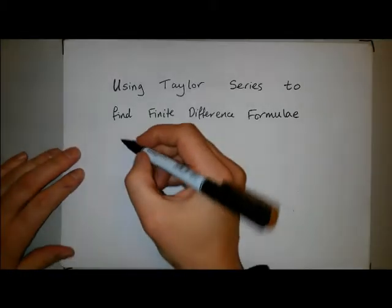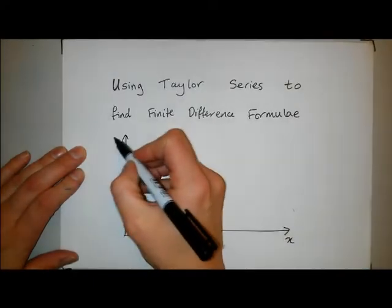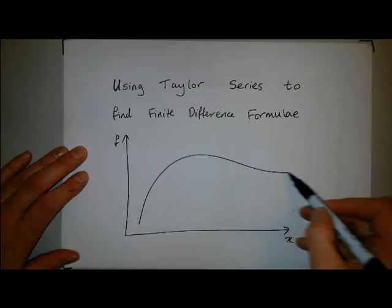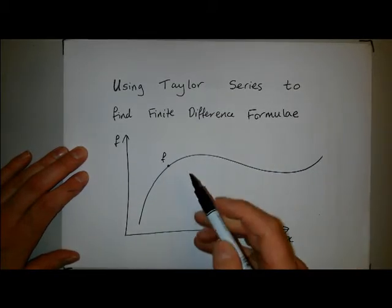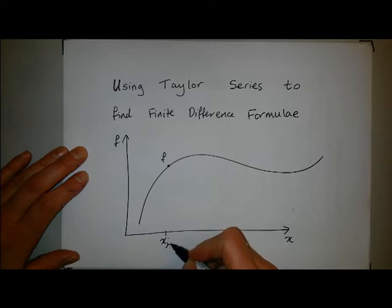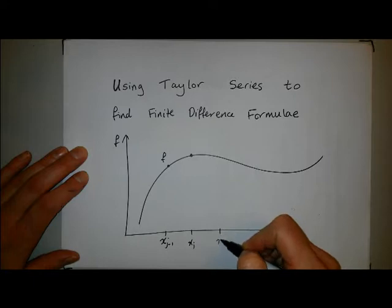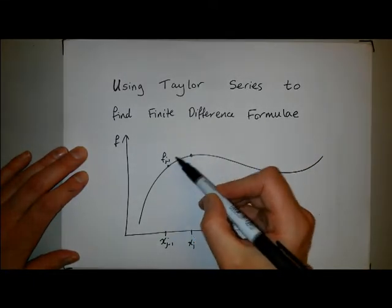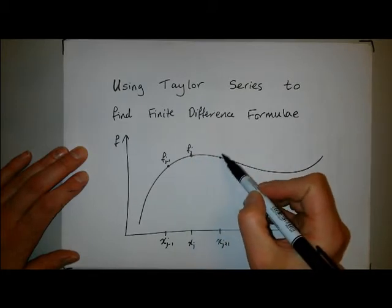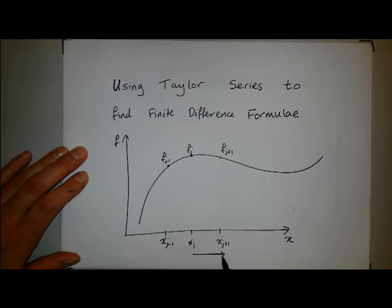I'm going to assume I have a function f, a function only of space x, and f is known at points x_{j-1}, x_j, and x_{j+1}, and I'm going to call that f_{j-1}, f_j, and f_{j+1}. These positions are a distance delta x apart.